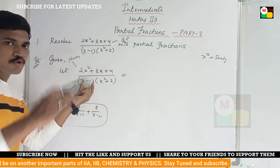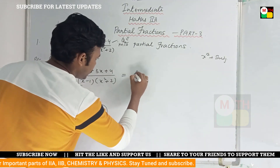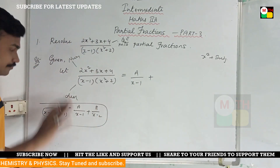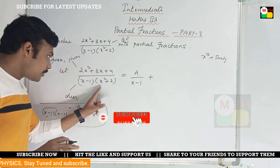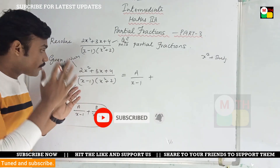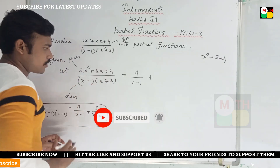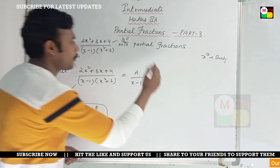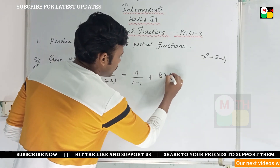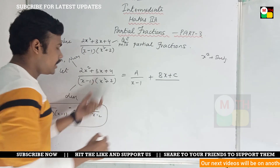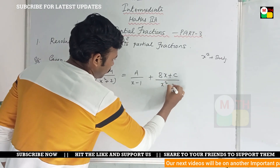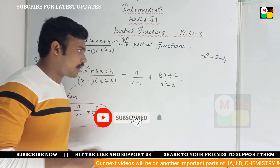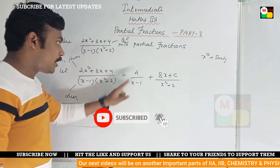x minus 1 is the normal factor, so a by x minus 1 is the normal factor. But we don't have a normal factor for the quadratic part. We have x squared plus something, so we use bx plus c in the numerator for that factor.